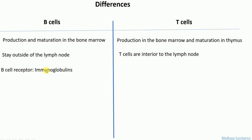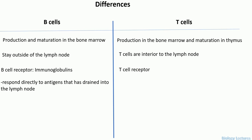The receptors of B cells are called immunoglobulins, and they are present on the membrane of the B cells, integrated into the B cells. The T cell receptors don't have a specific name like the B cells — they are simply called T cell receptors.